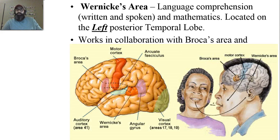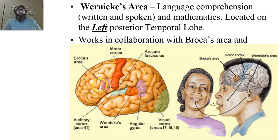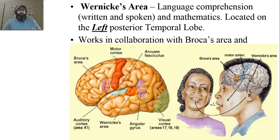This visual shows the motor cortex, Broca's area, the auditory cortex, Wernicke's area, and also what's called the angular gyrus — we won't get deeply into that. But understand that these pathways work collaboratively between these groups.